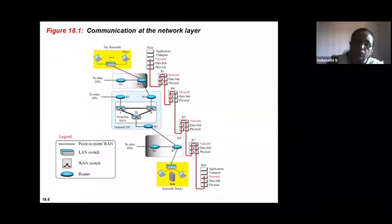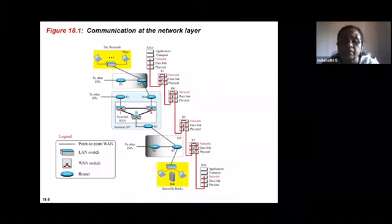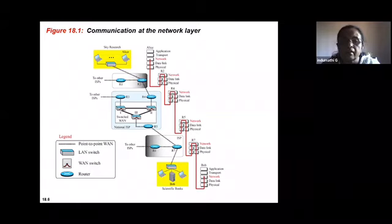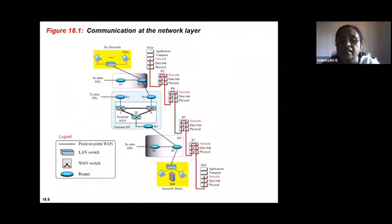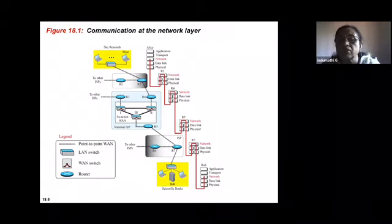The Alice machine is in one network and the destination Bob machine is in another network. To form a network, you require connecting devices. The Alice machine is connected to many host machines via a link layer switch. The three important layers to understand are physical, data link, and network layer — since packets must traverse many intermediate devices to reach the destination.